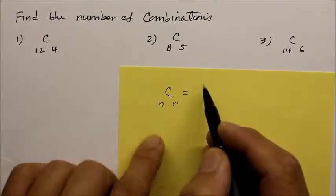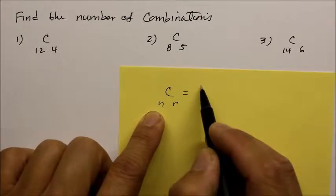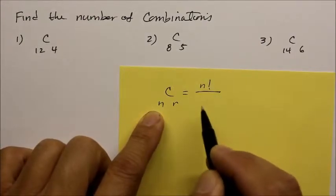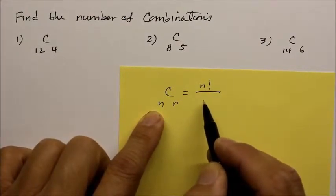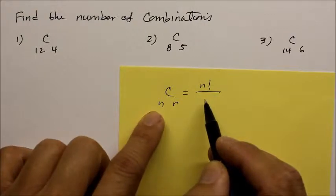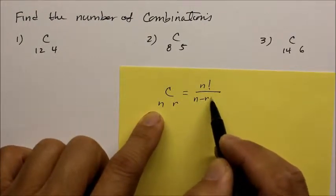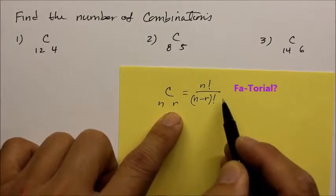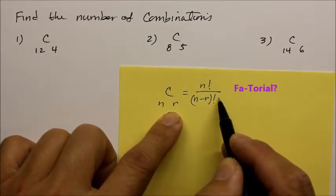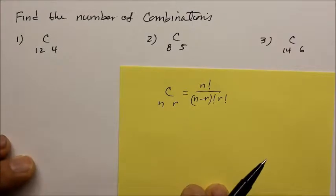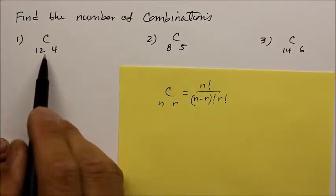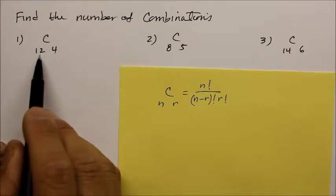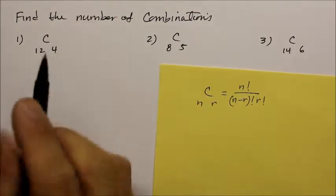And the way this is set up, whatever total number of objects we have, it's going to be n factorial divided by the difference of the object that we choose from the original total amount, so n minus r factorial, and then the object we take, r factorial. When you get a test and they give you a combination notation with n choose r, here's how you do it.